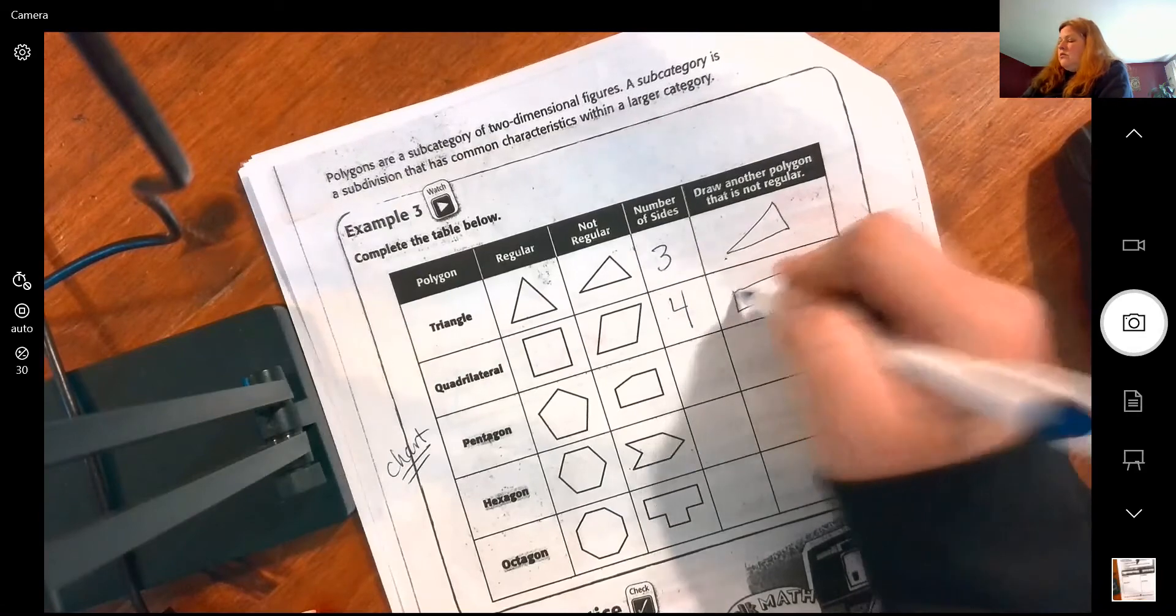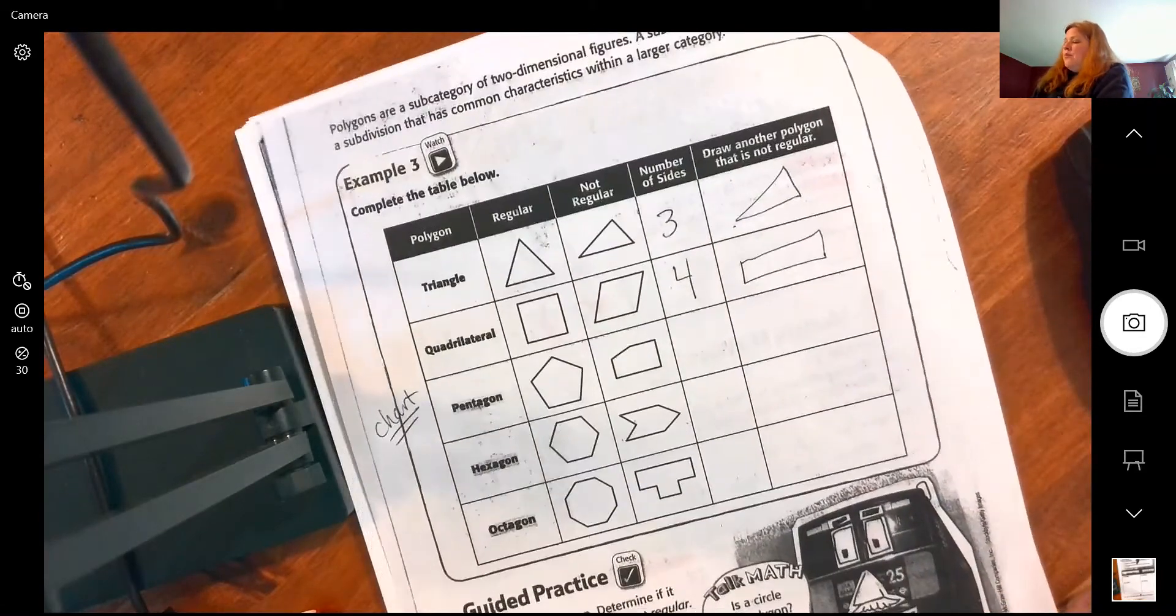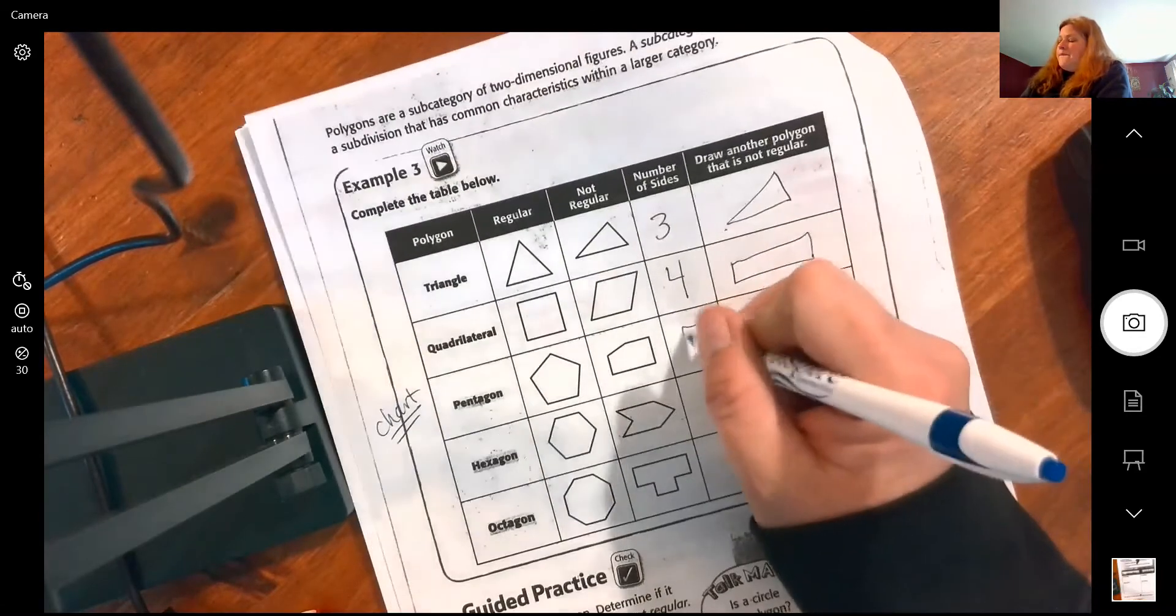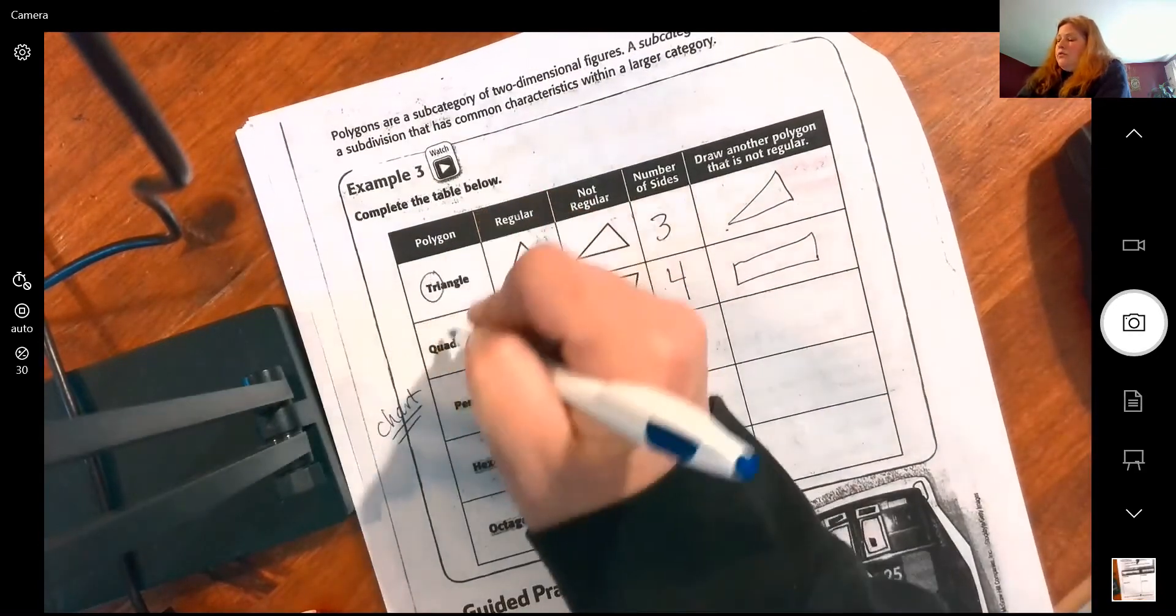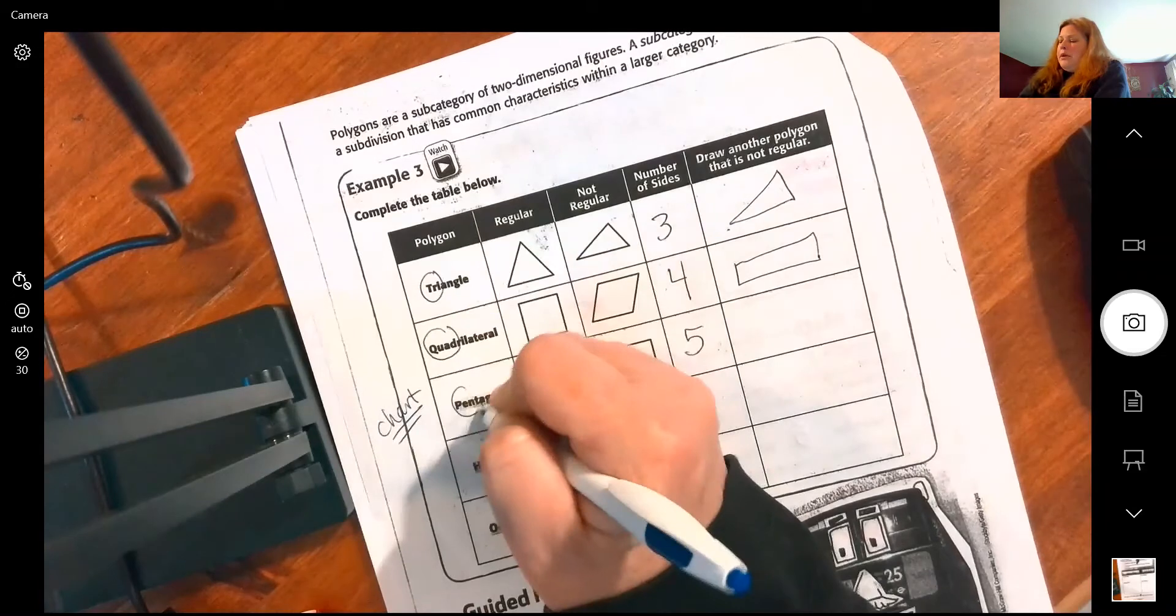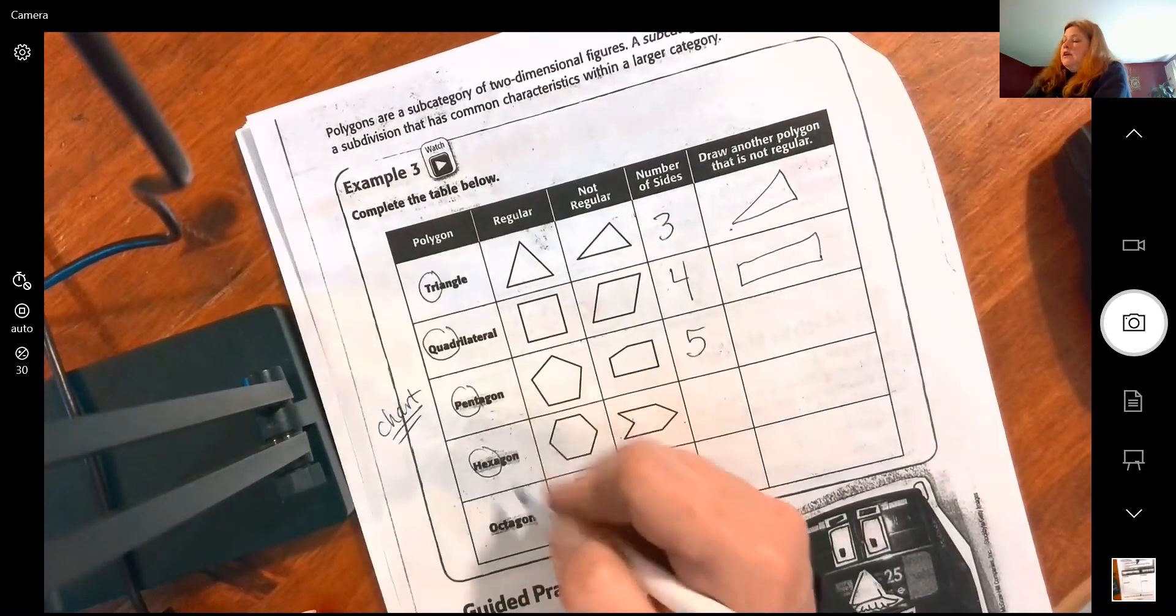Pentagons have how many sides? Five. Notice the pattern here: tri three, quad four, pent five. Remember these: tri, quad, pent, hex, oct.